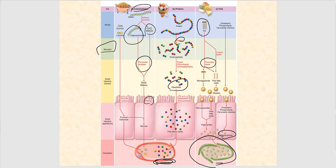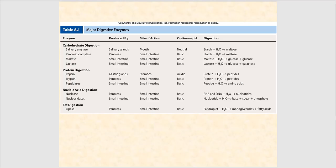Cholesterol, phospholipids, and fat-soluble vitamins immediately diffuse into the brush border cells in the small intestines, are converted to chylomicrons, exocytosed, and end up in the lymphatic capillary — the lacteal — as part of lymph. This table shows the major digestive enzymes, summarizing most of what we've covered.